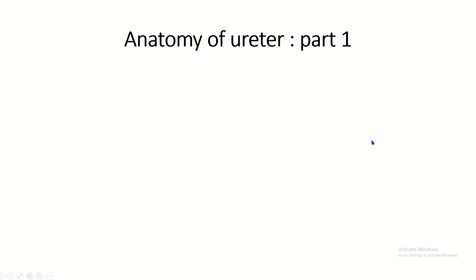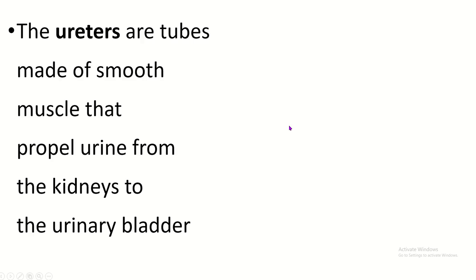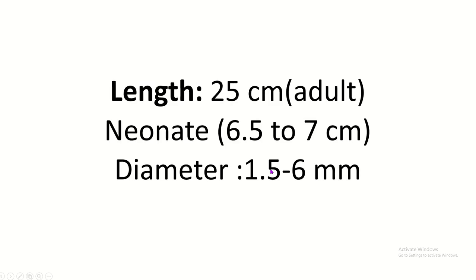Assalamu alaikum, welcome all to the Human Anatomy channel. In this video I discuss the anatomy of the ureter, part 1. Ureters are tubes made of smooth muscle that propel urine from the kidney to the urinary bladder.